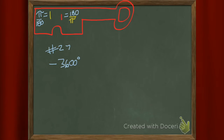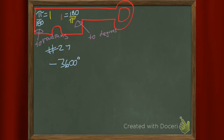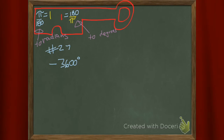Minus 3,600 degrees — that's backwards a whole bunch. We use this one when we're going to radians, and we use this one when we're going to degrees. Just remember: if you're going to degrees, degrees on top; if you're going to radians, then radians on top. What are we doing here? We're going to radians, so I picked the one on the left because it has the radians on top.